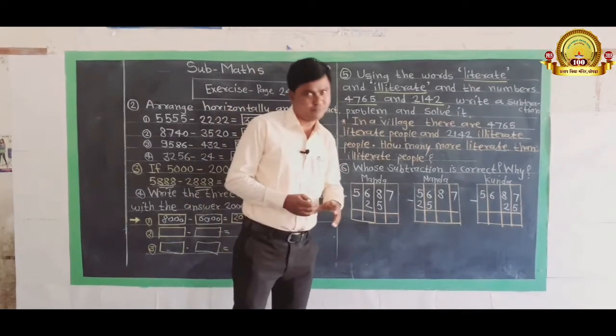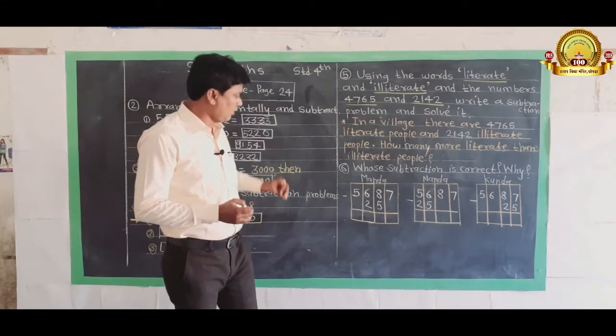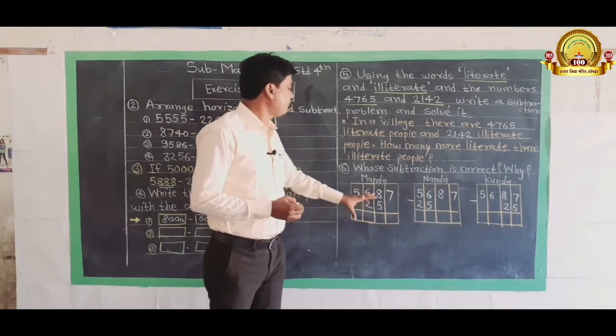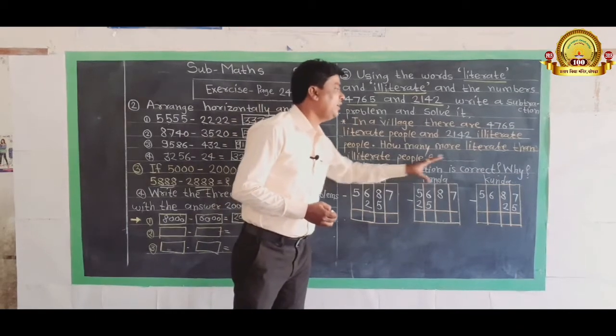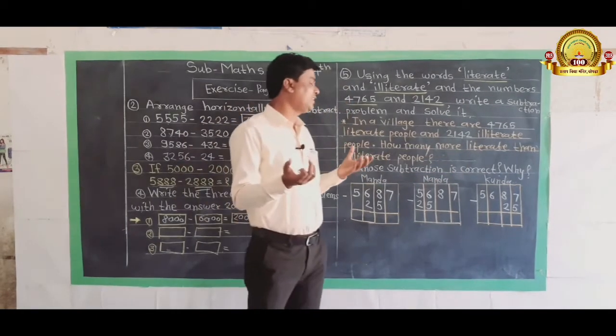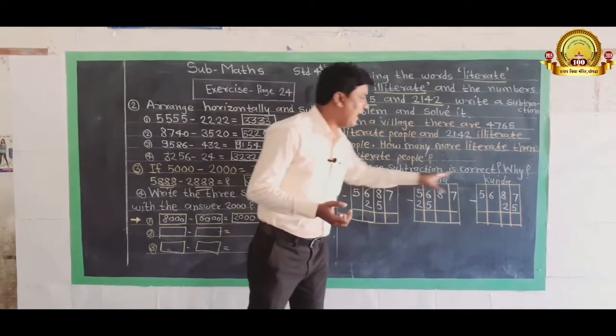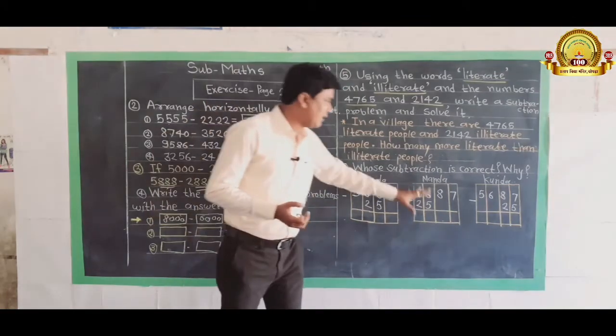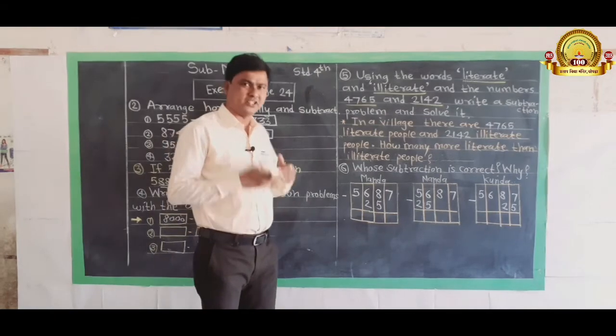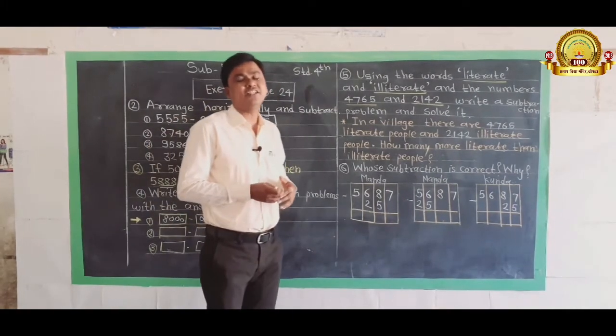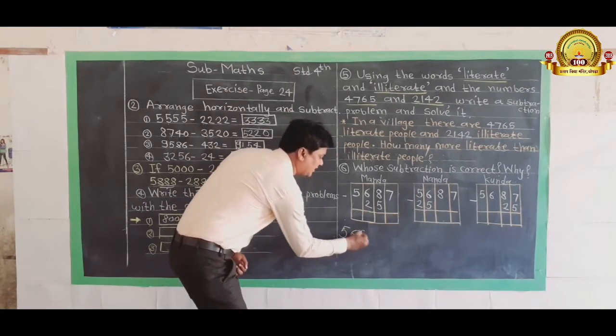You have to do subtraction. Now in this exercise, we are going to turn to next example. Whose subtraction is correct? There are three girls: Manda, Nanda, and Kunda.